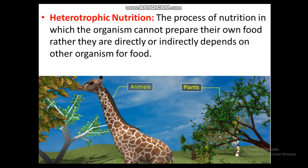Now we move to heterotrophic nutrition. This is the process of nutrition in which the organism cannot prepare its own food and so directly or indirectly depends on other organisms for food. For example, humans and giraffes cannot prepare their own food; a giraffe must eat grass or plants. This type of nutrition is known as heterotrophic nutrition.